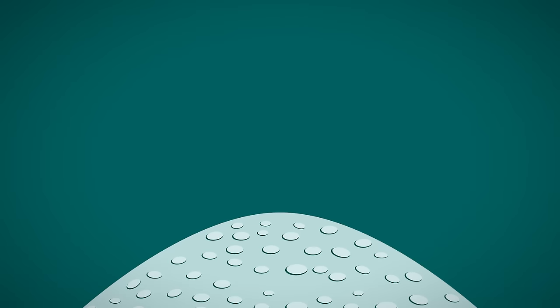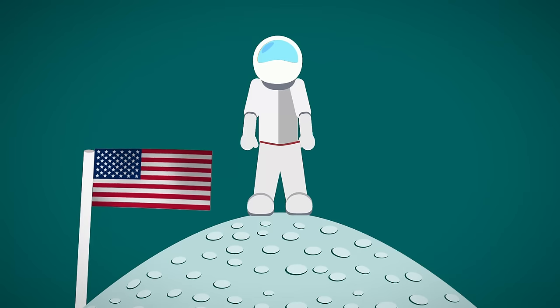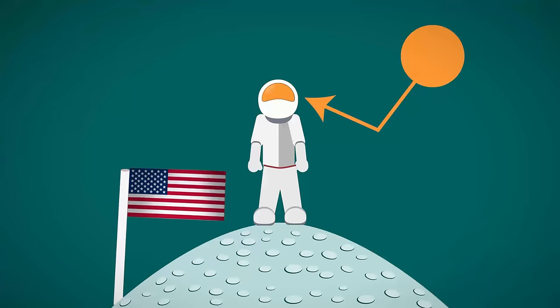Ed White, the astronaut who made the first American spacewalk in 1965, was wearing a gold plated visor to protect his eyes from the solar radiation.